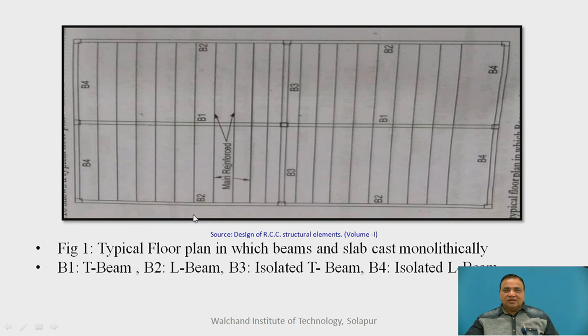This is figure number 1. Here we will find B1 beams are T-beams and all B2 beams are L-beams. For L-beams, there is flange portion only on one side; for T-beam flange portion is there on both the sides of the beam. And B3 is isolated T-beam and B4 is isolated L-beam.